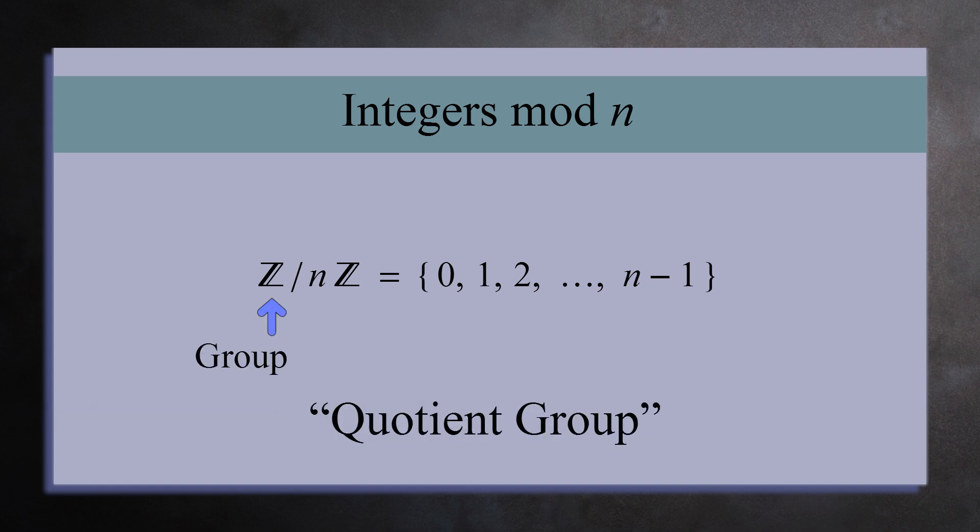The integers mod n are a finite ring with only n elements. Here is the notation for this ring. You may recognize this from your study of groups. This is the notation for a quotient group. z is the group and nz is a normal subgroup. The quotient group is the group of cosets. This notation is carried over to rings. Here, z is the ring and nz is an ideal. In this context, we call it a quotient ring.